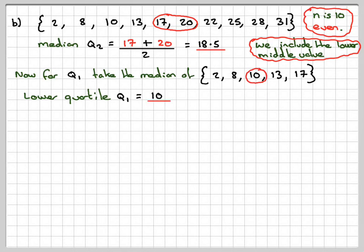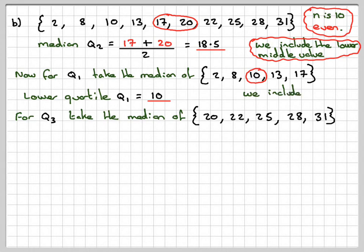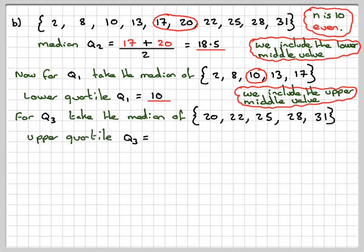And then for the upper quartile, you take the middle numbers, including the upper middle value, which is 20 from the median. And then you take the middle value, which is going to be 25. And then the interquartile range is just going to be the upper quartile minus the lower quartile. So it's 25 minus 10. So that gives me 15.